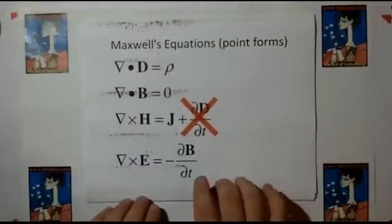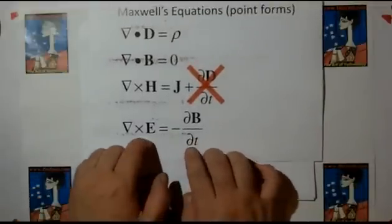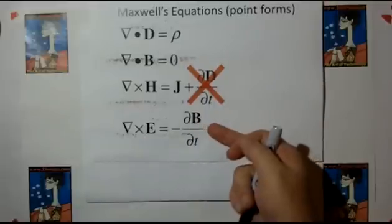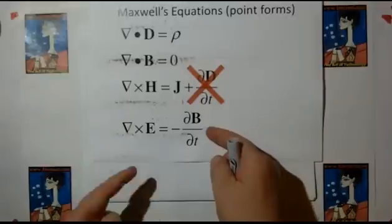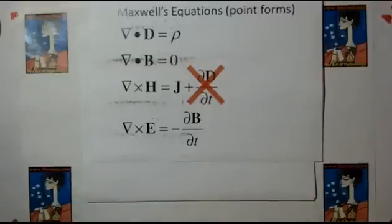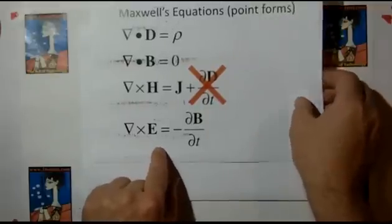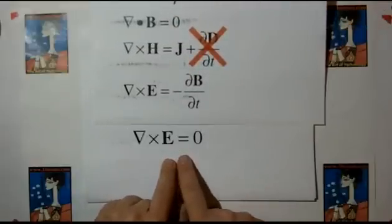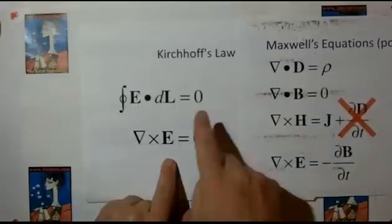We're going to continue with this equation now, this is Maxwell's version of Faraday's Law. This says that a time-changing magnetic field creates an electric curl. Now, what you'll never find in any textbook on electromagnetic physics is Faraday's Law, Maxwell's version printed on the same page as Kirchhoff's Law. Kirchhoff's Law in integral form is this, in point form is this.